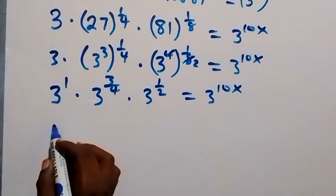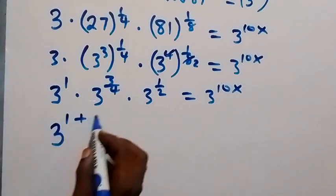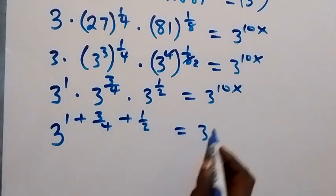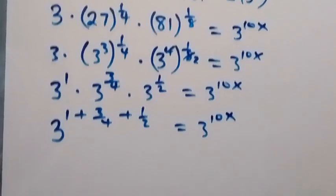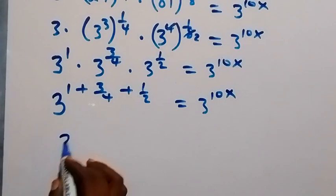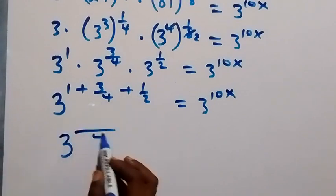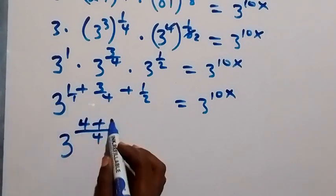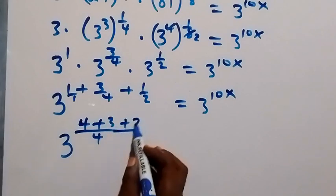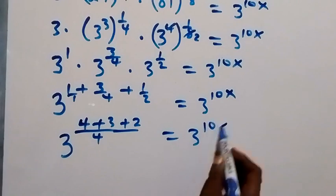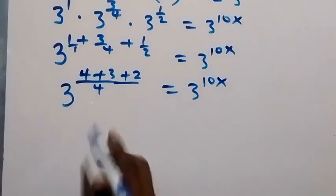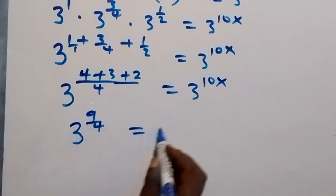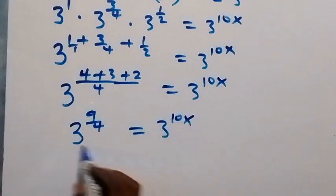From here we bring the powers together: 3 raised to power 1 plus 3 over 4 plus 1 over 2, equals 3 raised to power 10x. Bringing this together as one fraction with denominator 4: that's 4 over 4, plus 3 over 4, plus 2 over 4, which equals 3 raised to power 10x. Summing this gives 3 raised to power 9 over 4, equals 3 raised to power 10x. Since the bases are the same, we equate the powers.